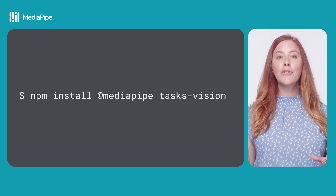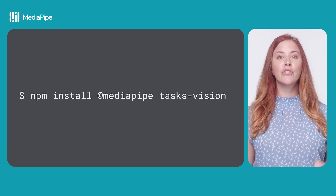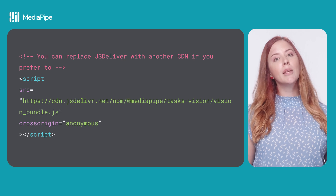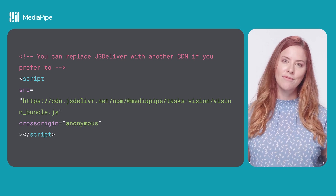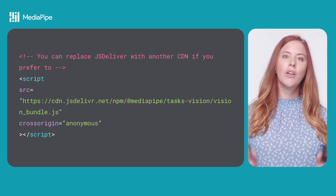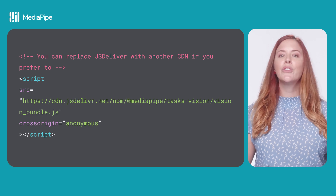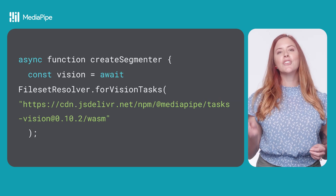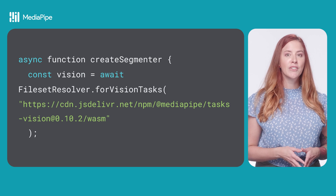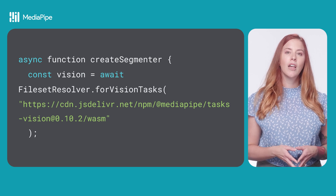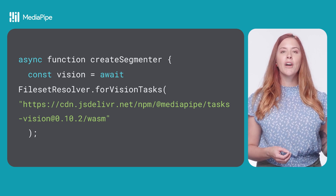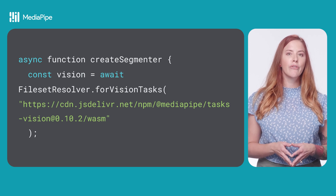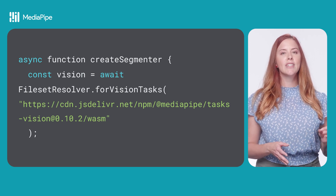You can download the package using NPM and use a JavaScript compilation tool like Webpack, or you can import the package using a CDN. Once the API is installed, you're ready to initialize. Here we have a function, createInteractiveSegmenter. First, we configure our WASM binary loading using the file set resolver for vision tasks method.